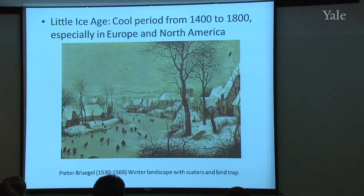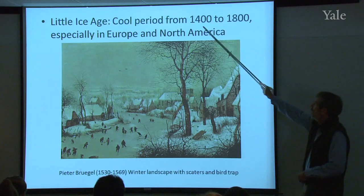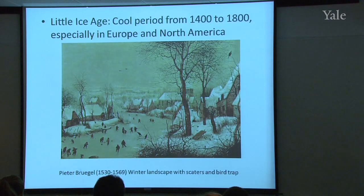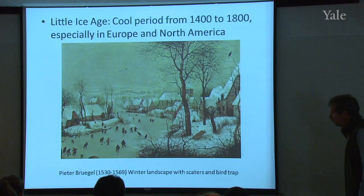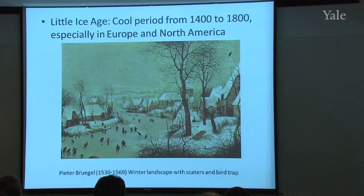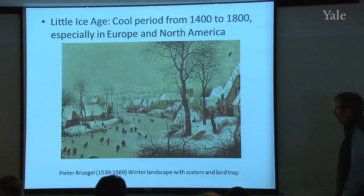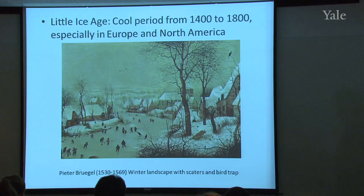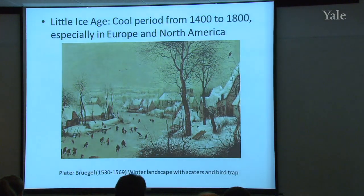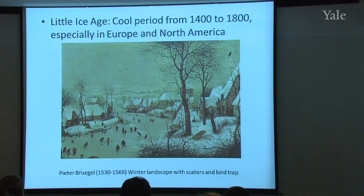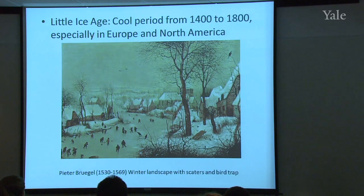Then came the Little Ice Age, roughly 1400 to 1800 — historians will argue forever about the exact dates; it's impossible to set definite boundaries. A painting by Bruegel from the 1500s gives you a sense that it was a colder period in Europe. The Thames froze over, as did many European rivers that don't freeze today, and this was recorded in art as well as in economic and other records of the time.